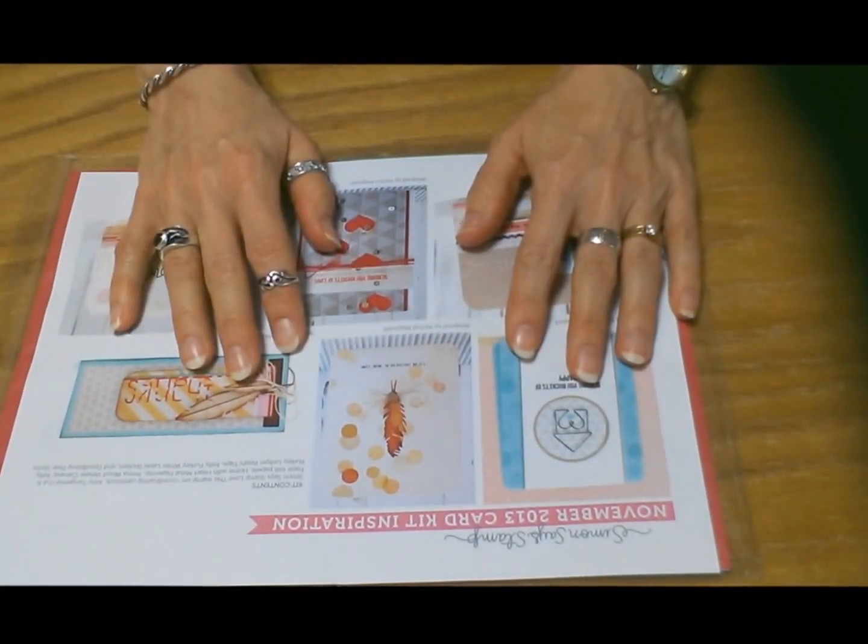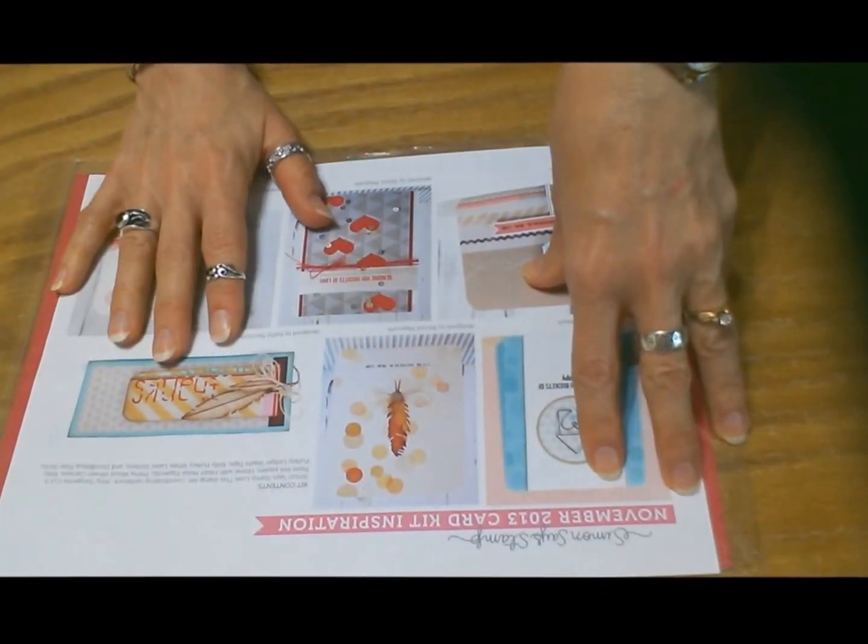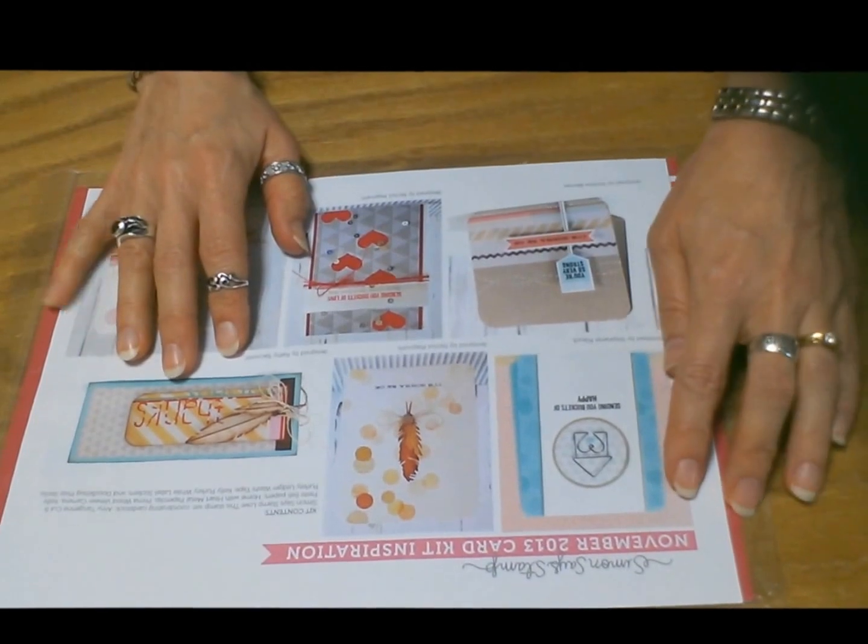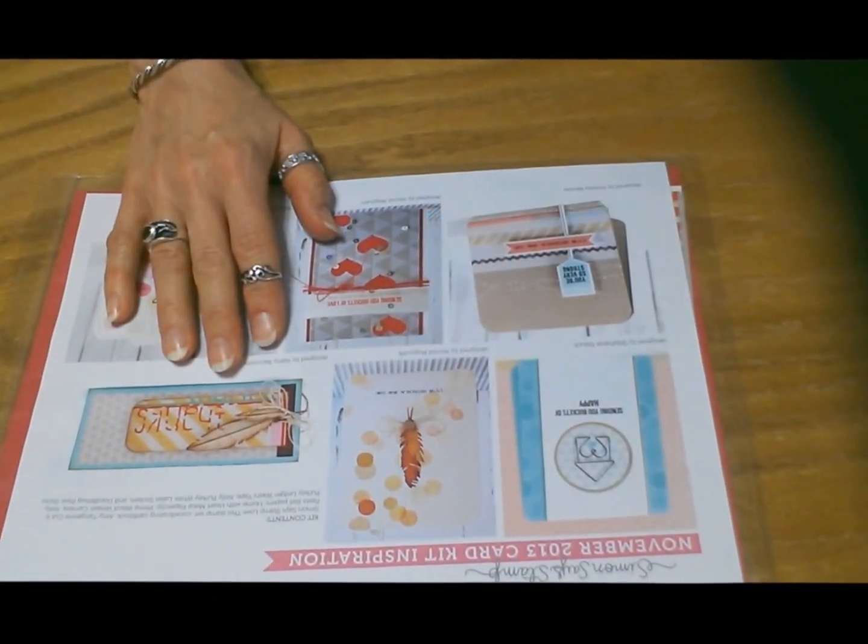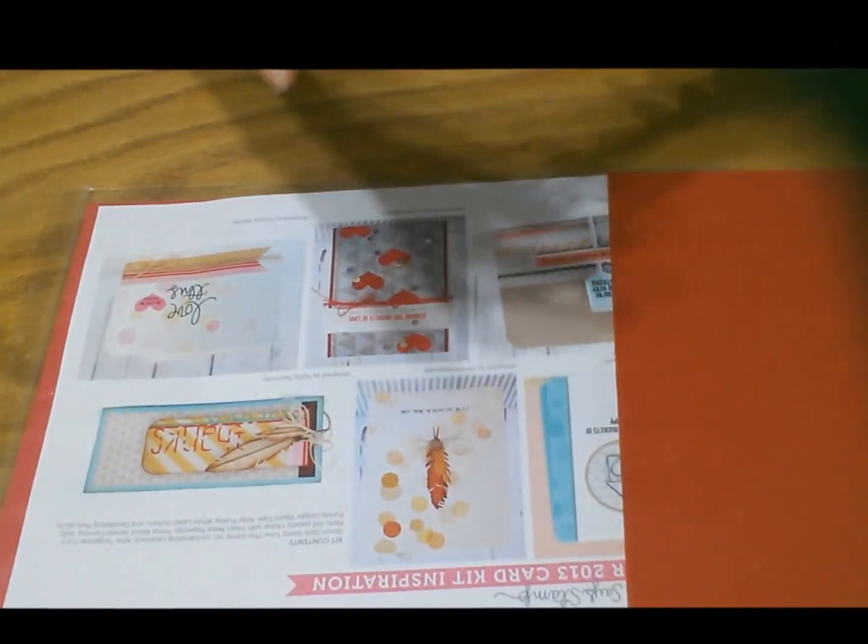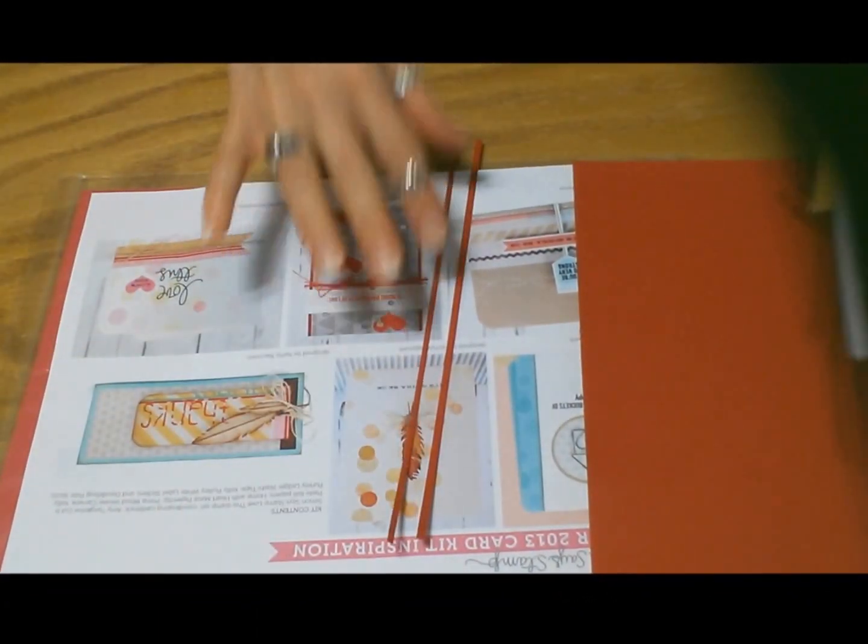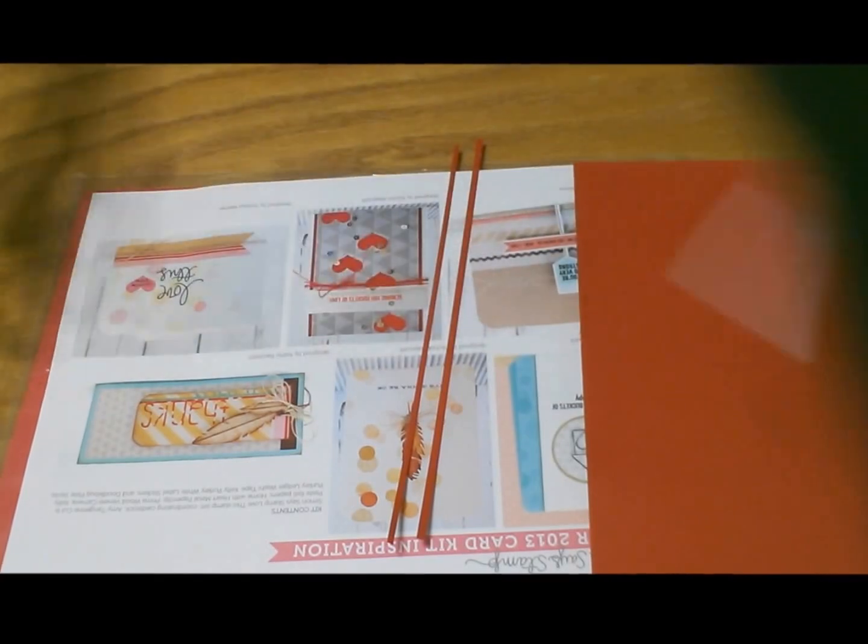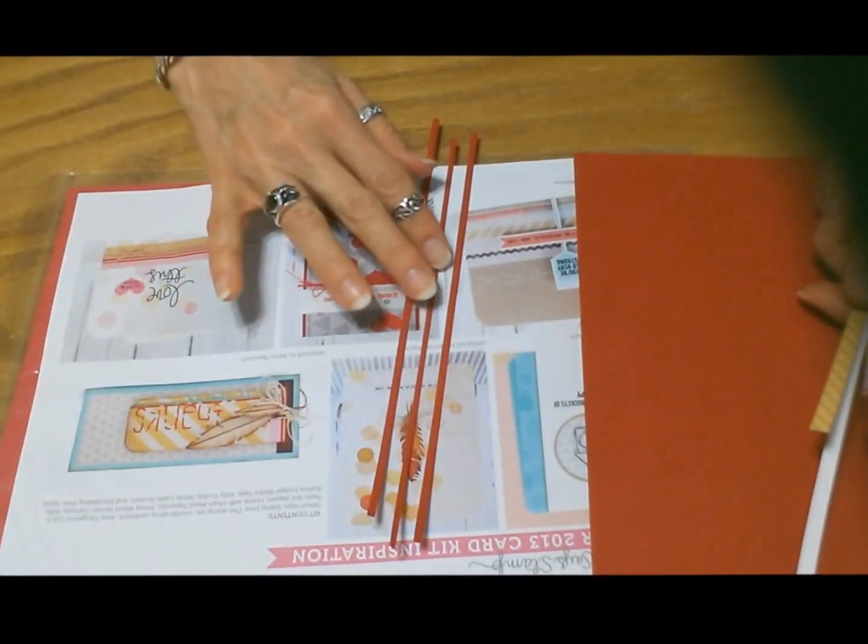I'm starting with an old card kit from Simon Says Stamp from November 2013. I had some bits and pieces of paper and stuff left over from it and I thought I'd use it up. This technique is wonderful for using up your old scraps. You can use any kind of pattern paper you want. My only suggestion would be that smaller patterns look better, so sometimes the 6x6 papers work better than the 12x12, but you can do it with all sorts of different paper.